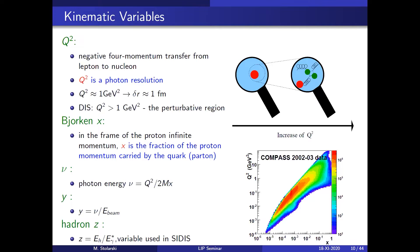The key kinematic variables are: Q², the negative four-momentum transfer squared — essentially the virtuality of the photon, which acts as the resolution scale (Q²≈1 corresponds to about one fermi); x, the Bjorken variable, the fraction of proton momentum carried by the struck quark (from 0 to 1); and y, the fraction of photon energy relative to the muon energy. Q² around 1 GeV² and above is needed to enter the perturbative QCD regime.